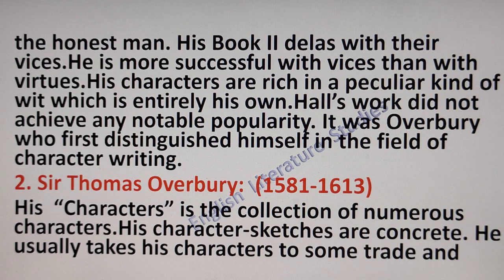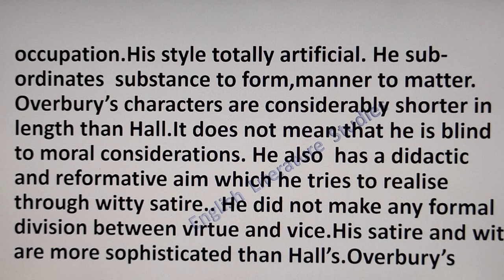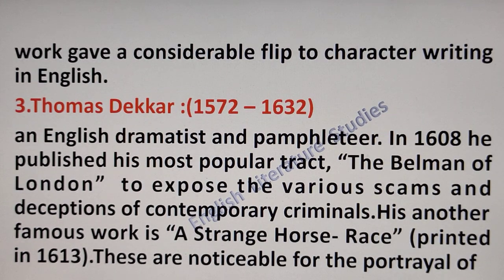Thomas Overbury's Characters is a collection of numerous characters. His character sketches are concrete, and he usually takes his characters from some trade and occupation. His style is totally artificial. He subordinates substance to form and manner to matter. Sir Thomas Overbury's characters are considerably shorter in length than Joseph Hall's. He also has a didactic and affirmative aim which he tries to realize through witty style. Thomas did not make any formal division between virtue and vices. His style and wit are more sophisticated than Joseph Hall's, and Overbury's work gave a considerable filip to character writing in English.